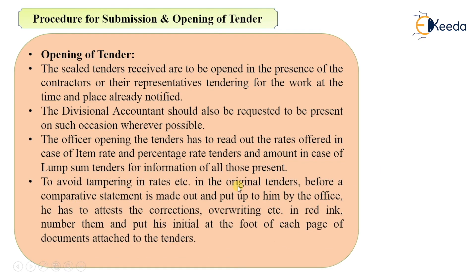To avoid tampering with the rates in the original tenders before a comparative statement is made, the officer has to attest any corrections, overwritings, etc., in red ink, number them, and put his initials at the foot of each page of the documents attached to the tenders. He will attest those corrections and sign at the bottom of each page so that there are no chances of tampering with the rates.